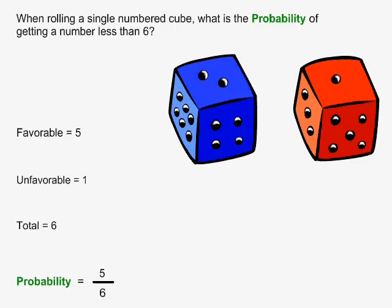There is only one number on the cube that is not less than 6, and that is the number 6. So the number of unfavorable cases is 1. The total number of sides on the cube is 6. The probability is equal to favorable over total, so the probability of getting a number less than 6 is equal to 5 over 6.